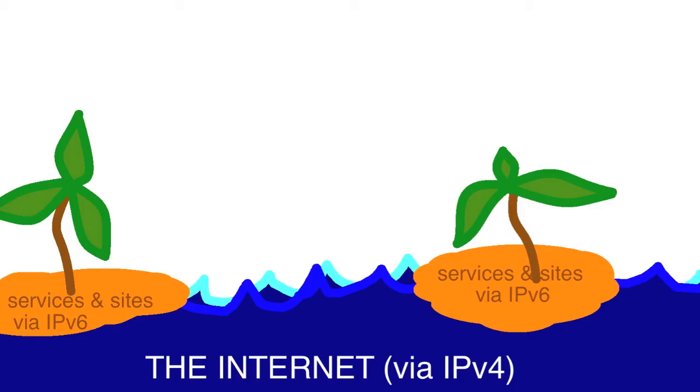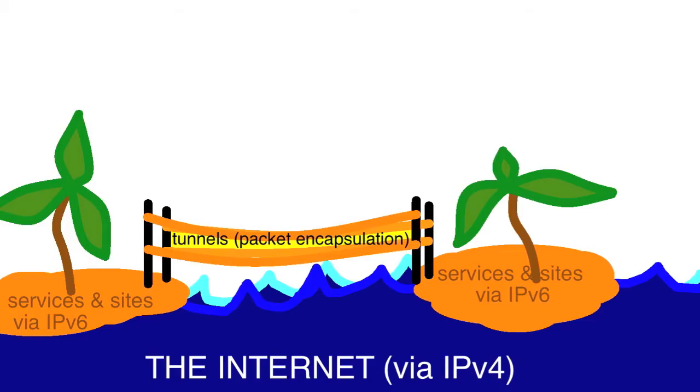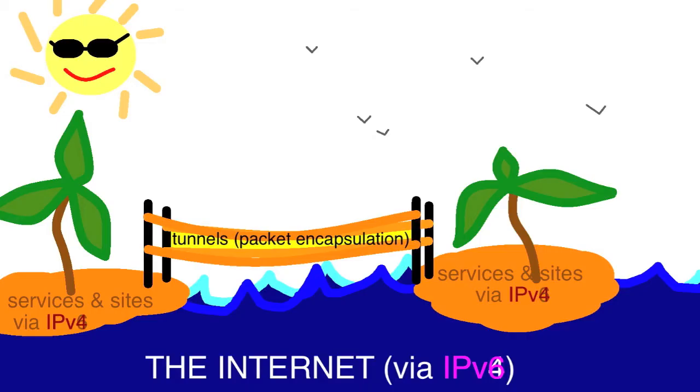Techworld.com published an article last week that had an interesting analogy. Think of all the sites and services that are accessible only via IPv4 — that's your ocean. Now think of the services which you can access via IPv6 — those are the islands in the ocean. Tunnels can be created to reach those IPv6 islands. Eventually the roles will switch, and there will be IPv4 islands which will need to be bridged across an ocean of IPv6.